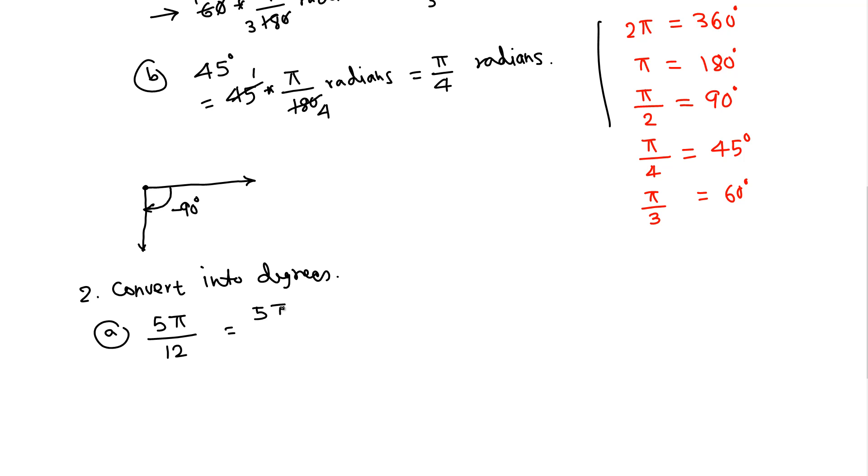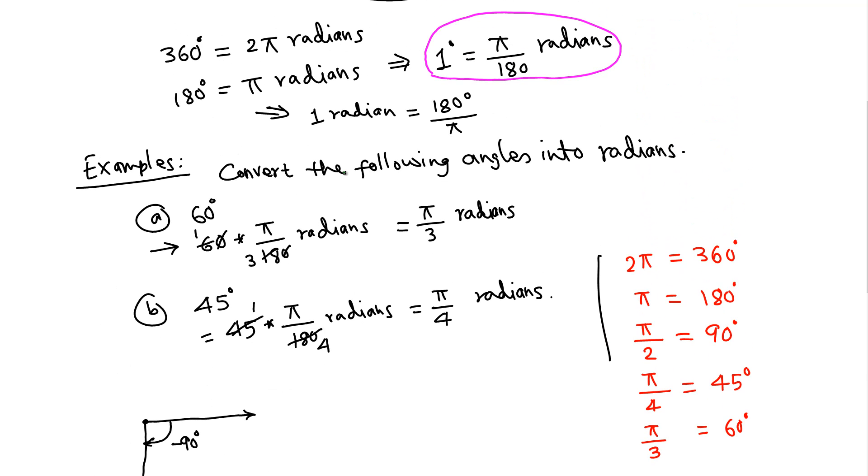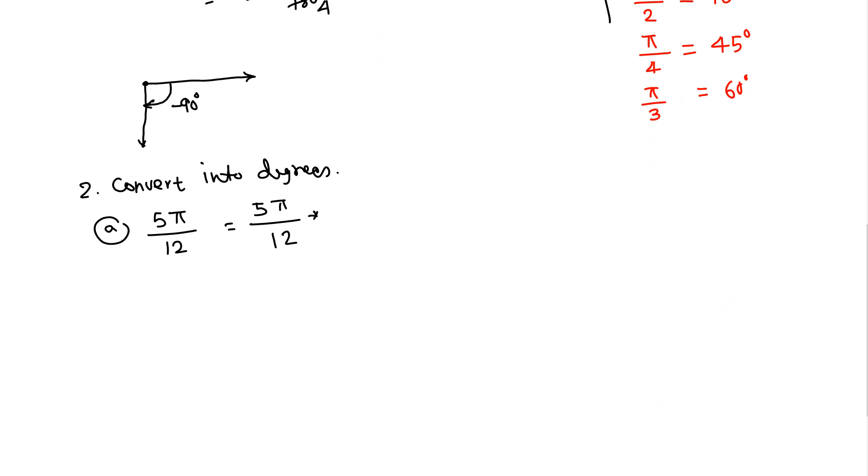We want to change into degrees, so 5π over 12, we need to multiply by 180 over π degrees. Let's cancel the common factors. π cancels, and 12 goes into 180 fifteen times, so 5 times 15, that's 75 degrees.